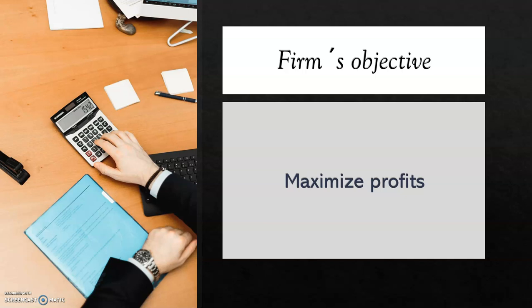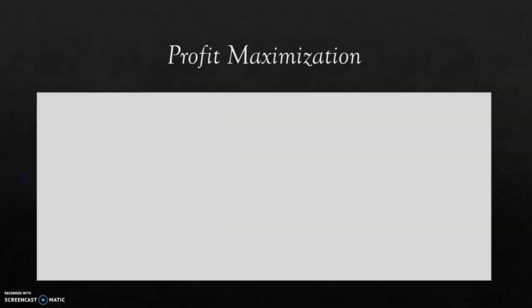However, all these purposes are referred to as short-term objectives. The reason is that a firm that doesn't maximize its profits at least in the long run will not be able to survive and will have to shut down. This profit maximization applies to any type of market — whether perfect competition, monopoly, oligopoly, and so on.